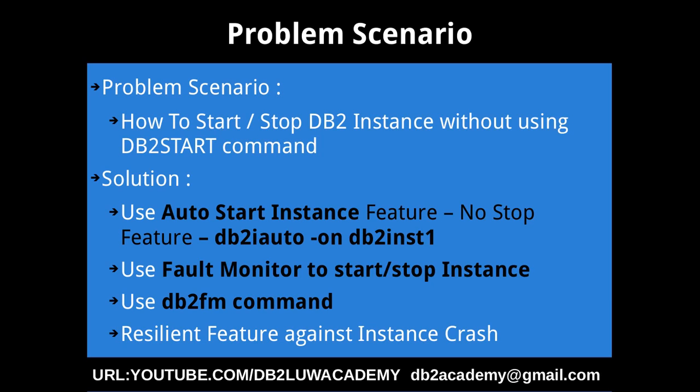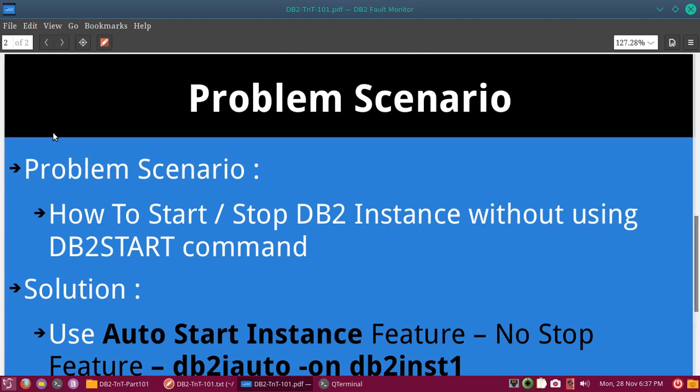The second alternate way is to use the Fault Monitor to start and stop the instance. You can use the db2fm command to configure that, and it is a resilient feature against instance crashes. Additionally, if you use the Fault Monitor together with the auto-start instance feature, you get that resilient feature as well — if the instance crashes, the Fault Monitor will start it back up and will not allow the instance to stay down. These two features are independent of each other, so you can use them according to your requirement.